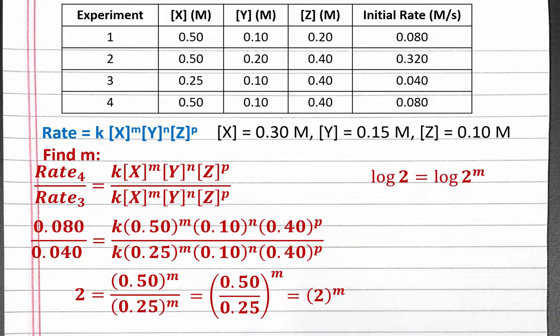We get the log of 2 equals the log of 2 raised to the m power. When you take the log of a number raised to a power, the power can be taken out of the log as a multiplication factor. So on the right, it becomes m times the log of 2. Then we can divide both sides by the log of 2 to solve for m. As we anticipated, m equals 1. We can plug this into our rate equation.